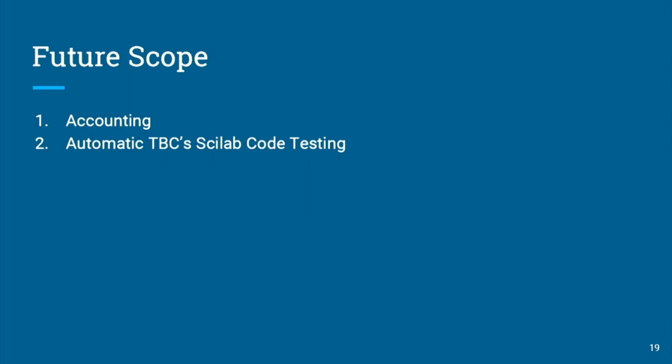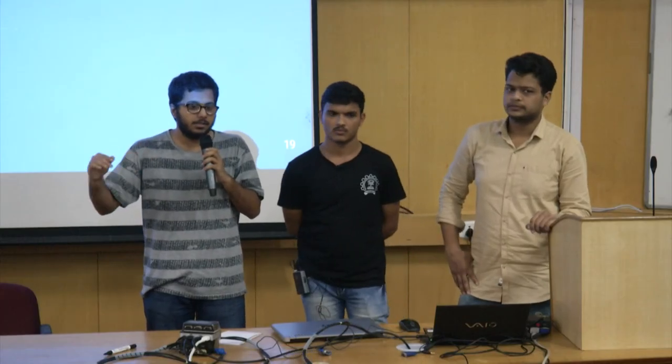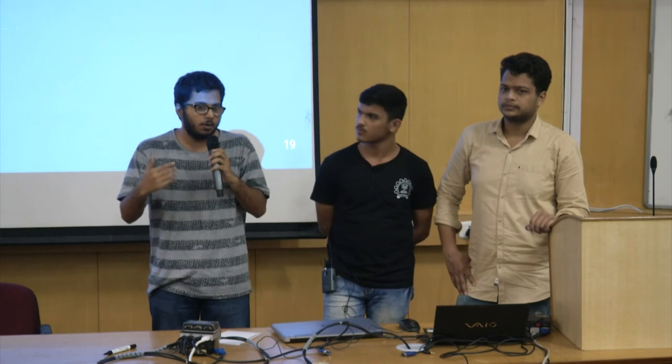Another feature under development is automated testing of Scilab codes upon upload. When a code is uploaded, it is immediately executed on the server and the output is logged. If the output contains the keyword 'error' — matching the generic Scilab error format — the upload is rejected at that point. This reduces pressure on admins who previously had to manually review each and every submitted code. Significant progress has been made on this feature.